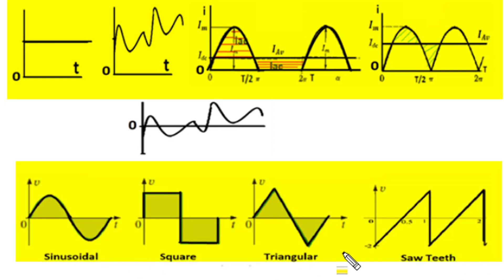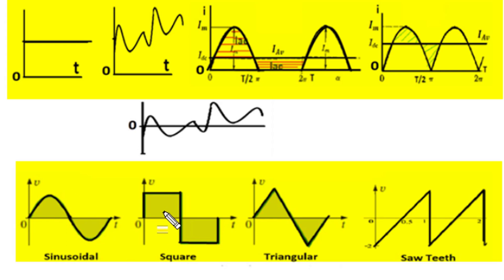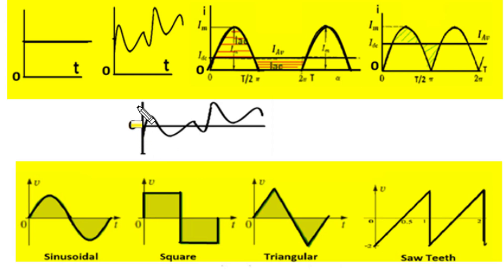These four signals — sinusoidal, square, triangular, and sawtooth — are popular alternating current signals which are periodic in nature and are symmetrical, having identical positive and negative halves with regular repetition of identical wave shapes again and again in a cyclic manner. In contrast, a non-periodic irregular alternating current signal is very difficult to analyze.